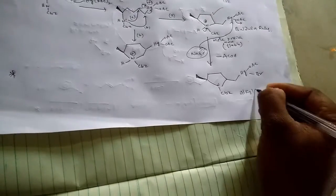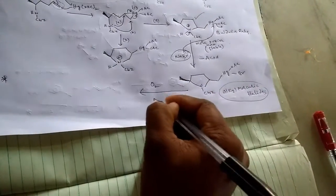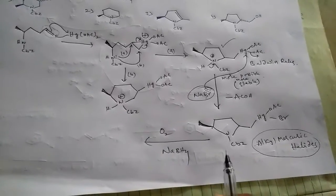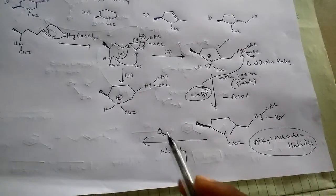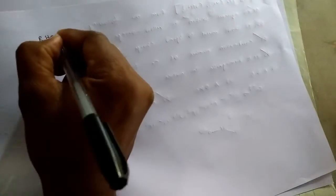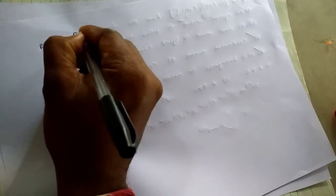Right, so we should check alkyl mercuric halides reactions. You should check alkyl mercuric reactions with molecular oxygen and sodium borohydride. For the simplification, I'm giving generalized mechanism of alkyl mercuric halides with the molecular oxygen and sodium borohydride.